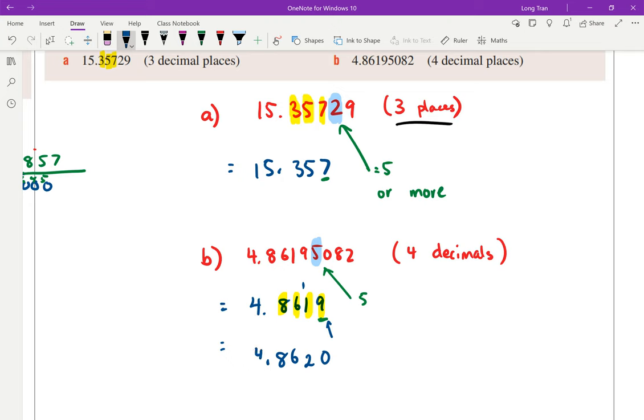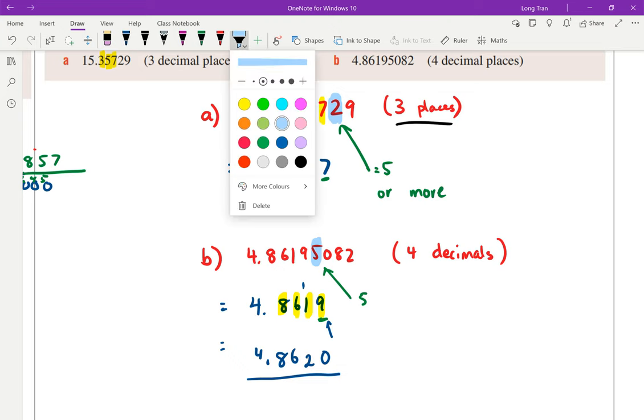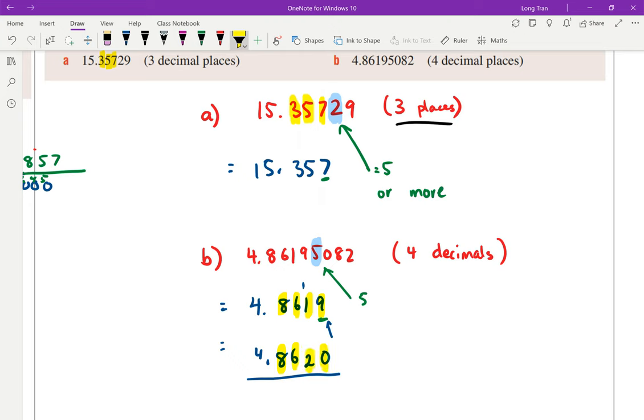When they say four decimal places, please include that zero. In Year 12, without that zero, you lose a mark. If they ask for four decimal places, you must put it. It's a trivial idea, but that's how examiners mark. Make sure you have one, two, three, four decimal places.